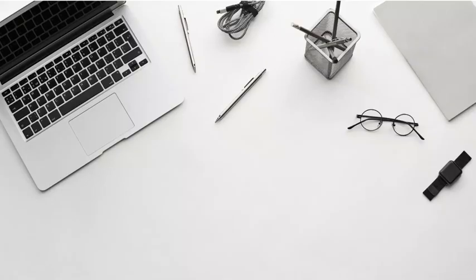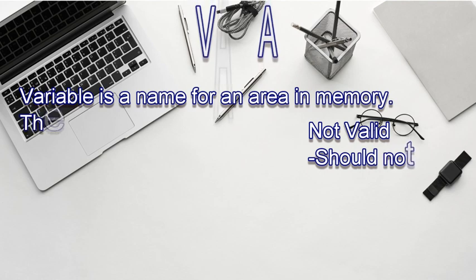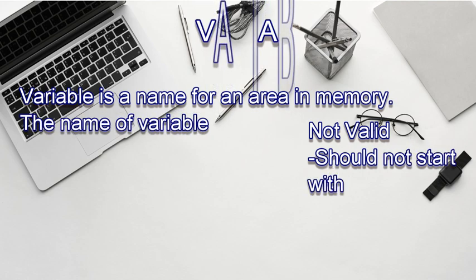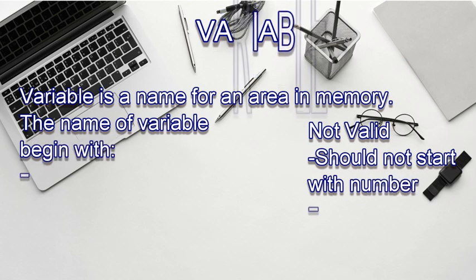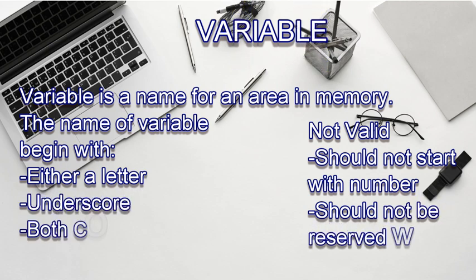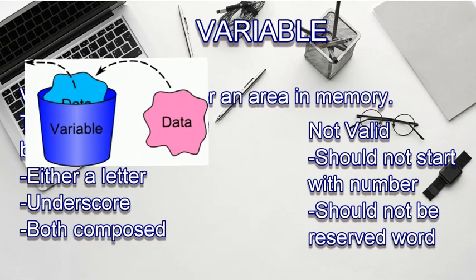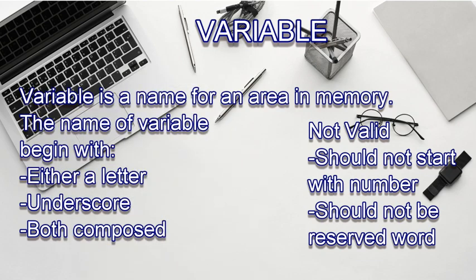Now, what do we mean by variables? A variable is basically a name - just like your name is your identity by which you are recognized. Similarly, when we use variables in a program, it is a name given to define something. For example, if I write 'int a', that means the variable 'a' is of integer type and will hold a particular value. A variable name must start with a letter or underscore, not a number.